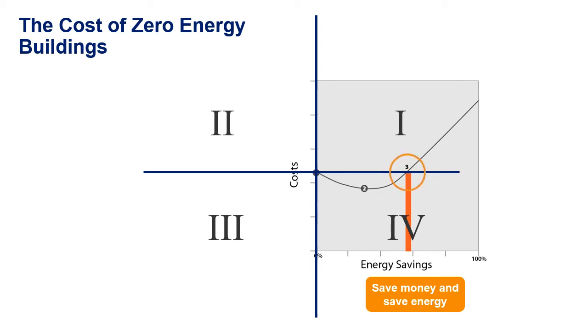Note that it is possible to build a building for less money than a code compliant building. That minimum cost point is point two and every solution below the x-axis is a less expensive building. Then once we apply other energy saving strategies they tended to start costing more money and then what happens is we can figure out how to design buildings around this and we can talk about what the value added is.